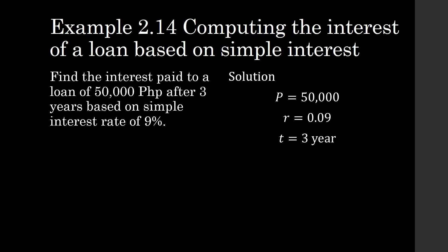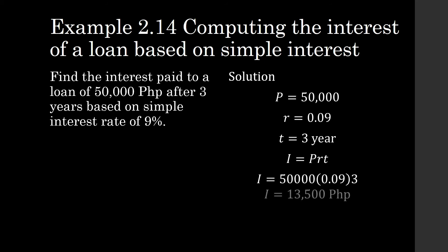So the interest paid on a loan of 50,000 after three years at an interest rate of 9% is equal to I. I is equal to P times R times T. It is equal to 13,500 pesos.